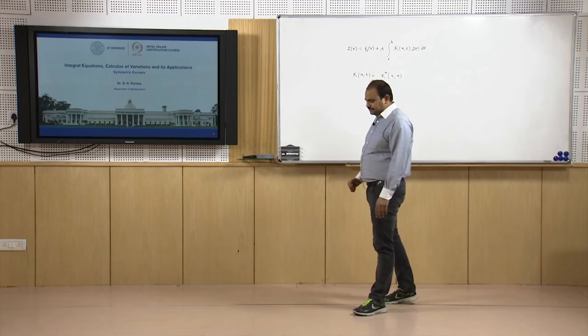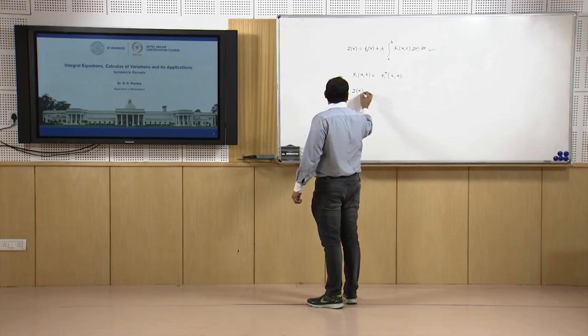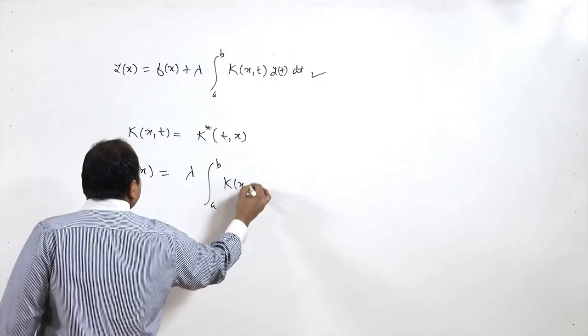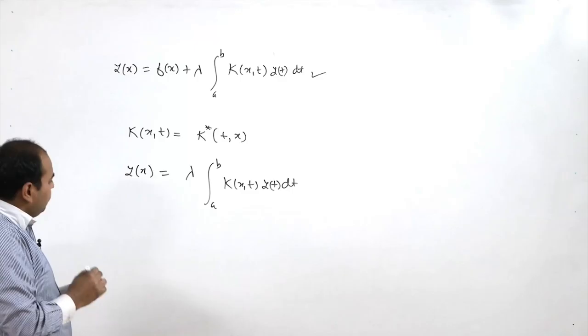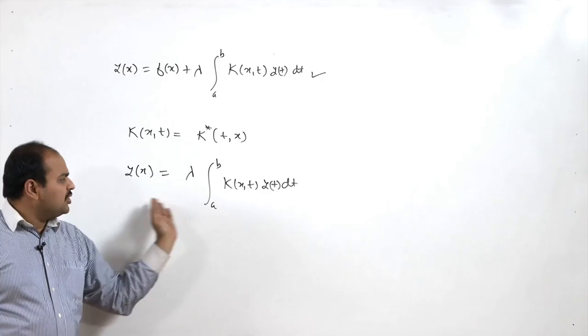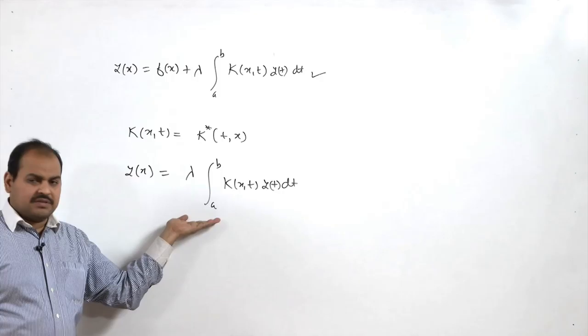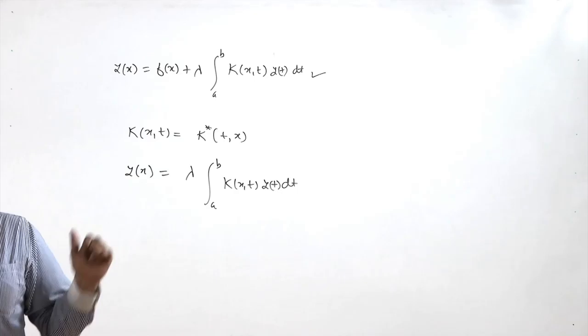Here we will discuss some properties and the solution of this. If you consider the homogeneous version with kernel k(x,t), that is λ ∫[a to b] k(x,t) y(t) dt, then we try to find the solution and the constant λ for which we have a non-trivial solution — we call that λ an eigenvalue of this kernel, and the corresponding non-trivial solution we call an eigenfunction.